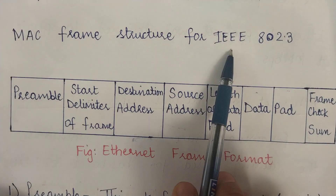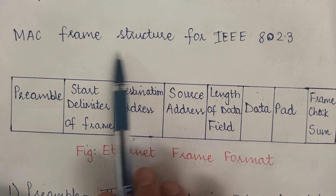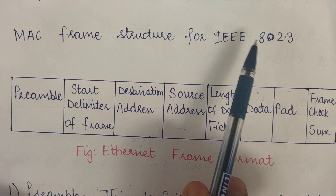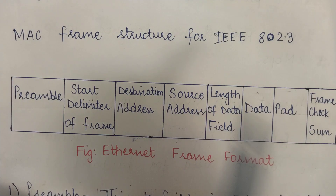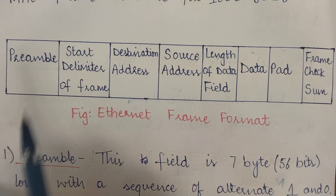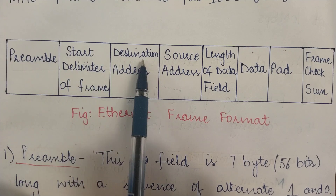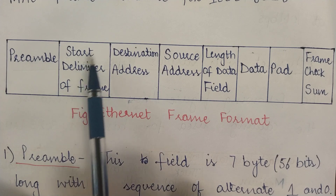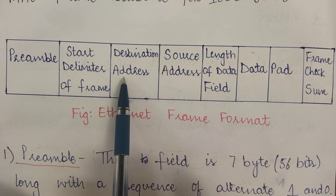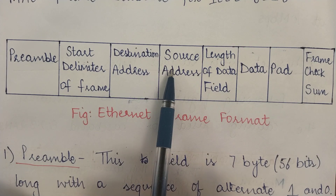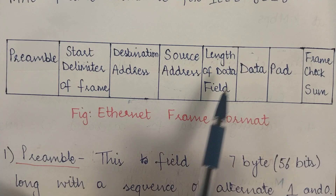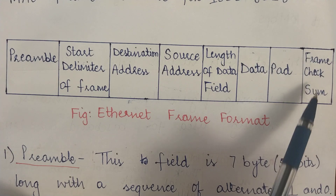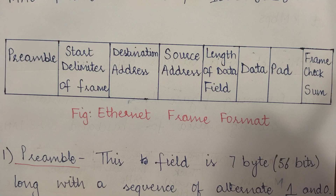The frame structure for IEEE 802.3 is also known as the MAC frame structure, since Ethernet operates in the MAC sublayer of the data link layer. There are 8 fields in an Ethernet frame: preamble, start delimiter, destination address, source address, length of data, data, pad, and frame checksum.